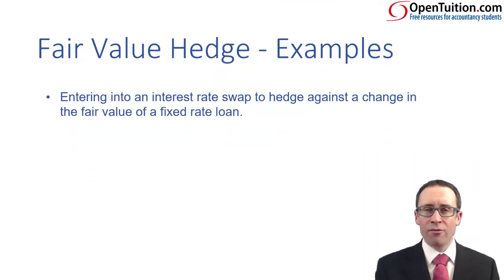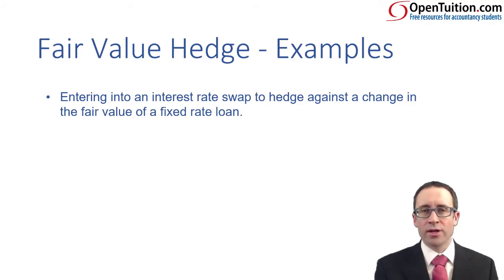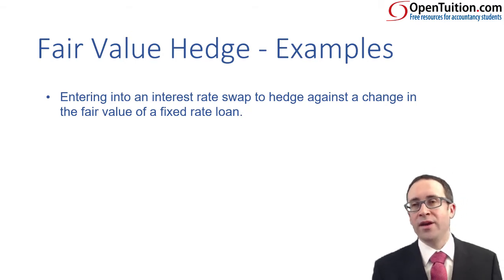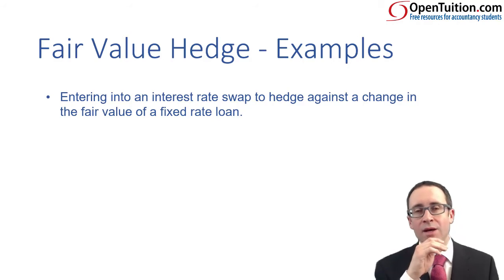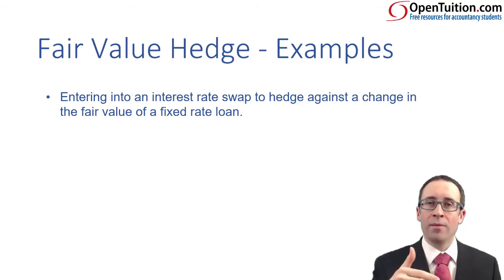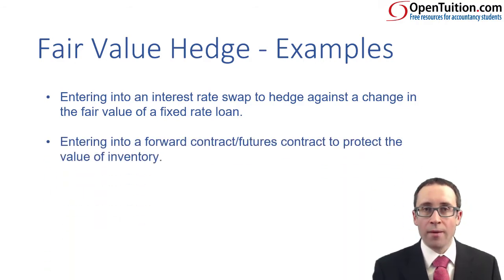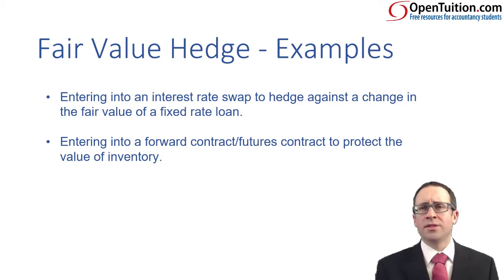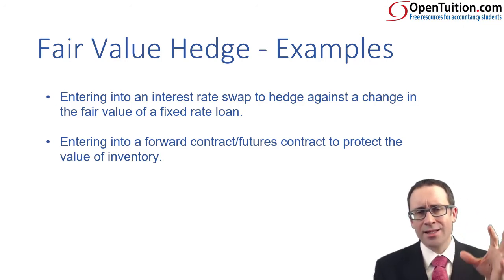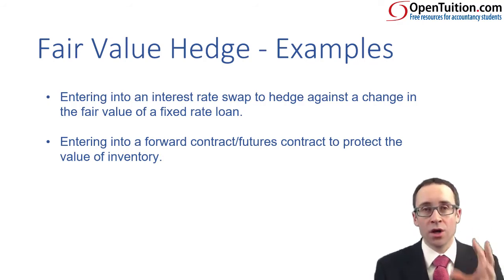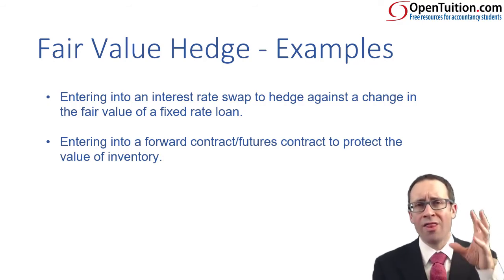Real-life examples that could potentially appear in the exam: you could have an interest rate swap set against the change in the fair value of a fixed rate loan — that could be a fixed rate loan that you have issued as a liability, or a loan whereby you have been the investor in the debt, so you have a financial asset. The other one is whereby you enter into a derivative, a forward or a future, to protect the value of your inventory. The inventory is within your financial statements and is designated as the hedged item.